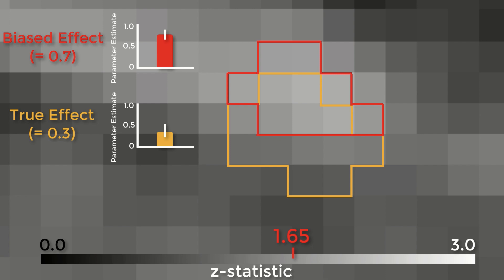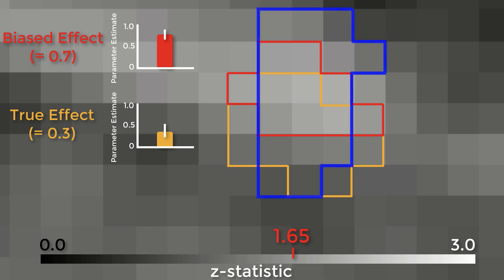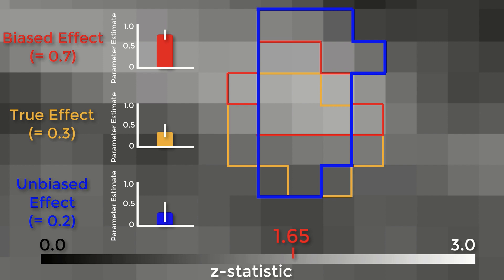If we used an independent ROI — for example, with cross-validation — we would create a region that probably contains some true effect voxels and also some noise voxels. But these noise voxels will not be biased to be artificially high or low. In this example, the unbiased effect is slightly lower than the true effect, but in theory it could be higher or lower. It just won't be biased either way.